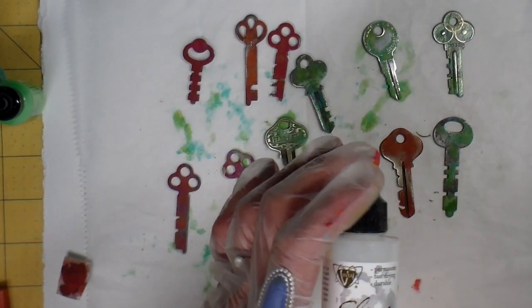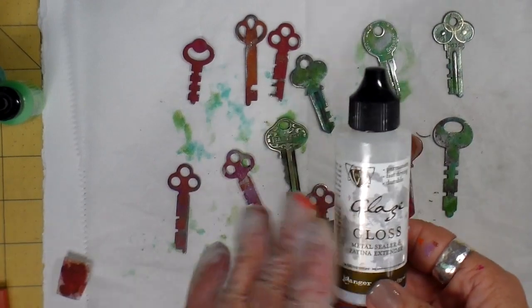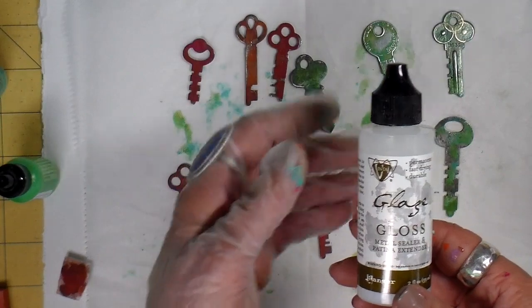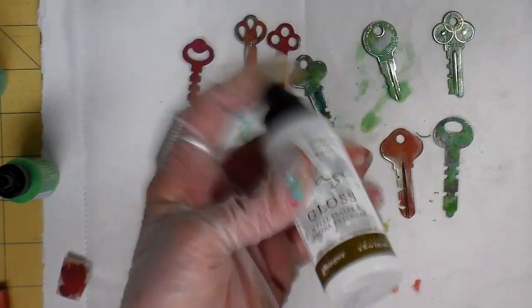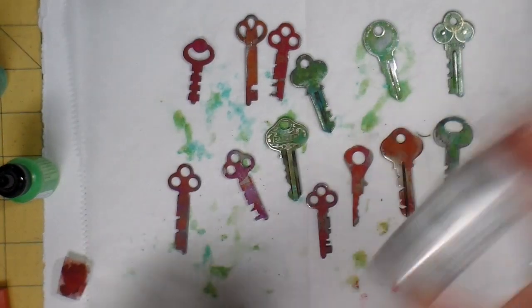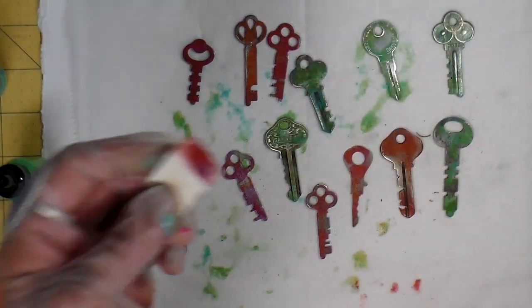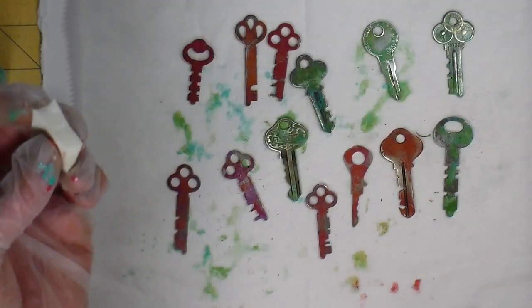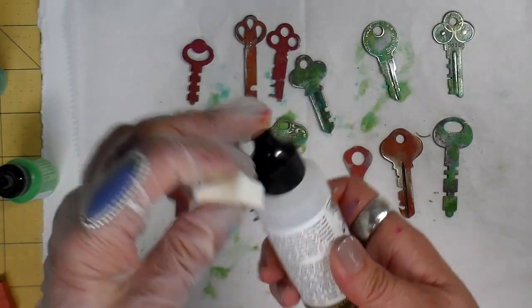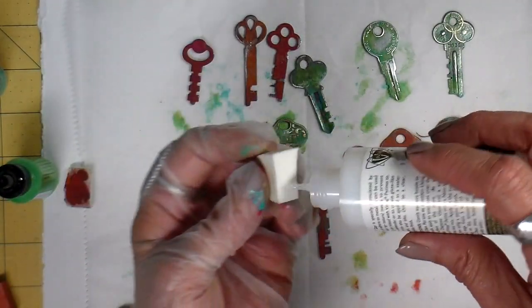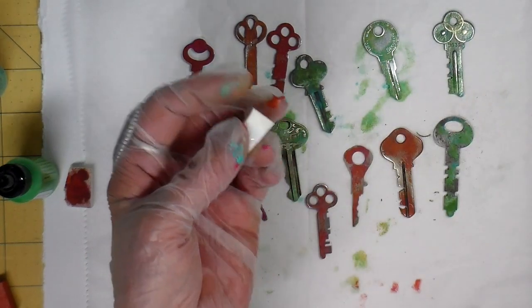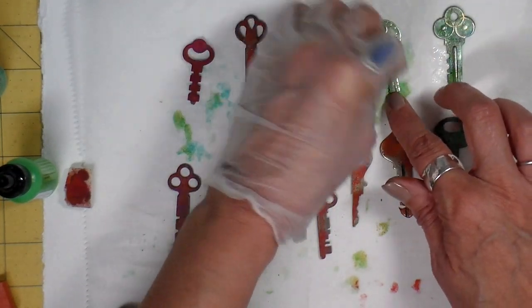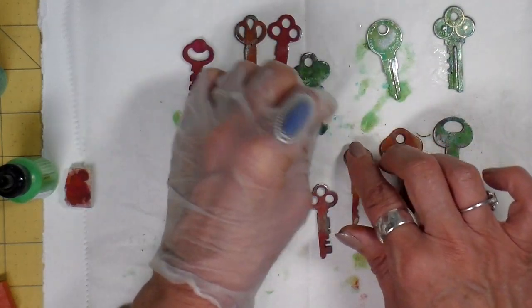The final step in the key preparation is to put the glaze on. This is the glaze that comes with the paints, called gloss - a metal sealer and patina extender. I'm putting it on my little makeup sponge and dabbing this on. This takes a little bit longer to dry, but as soon as one side is dry, I'm going to flip these over. This protects the paint and gives it a nice shine.